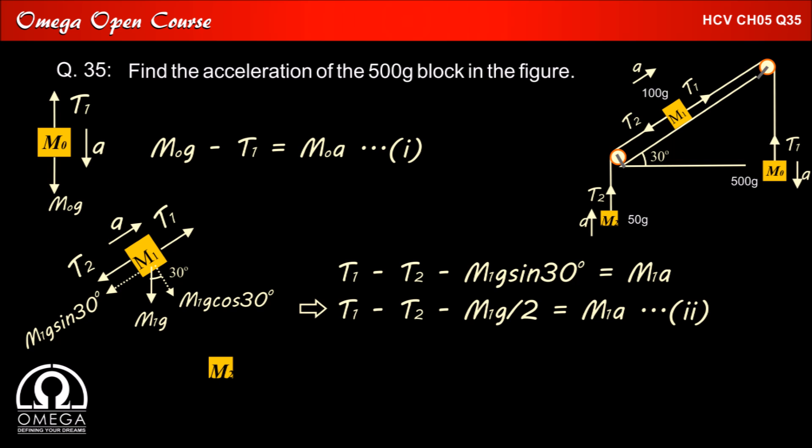In the free body diagram of M2, gravitational force M2g acts downward and the block is pulled upwards with tension T2. Writing equation of motion in vertical direction, we get T2 - M2g = M2a.